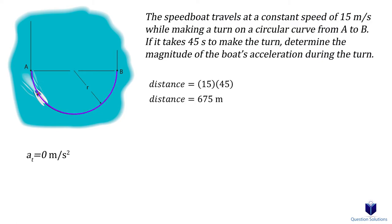That's half the circumference of a circle. The total circumference of the circle is 675 multiplied by 2, which gives us 1350 meters.